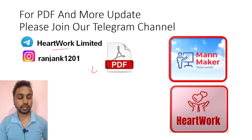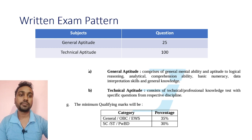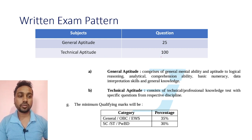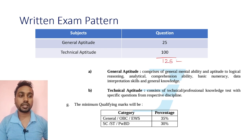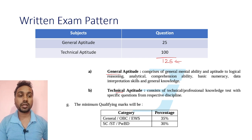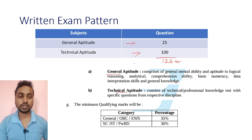For your exam, there will be a total of 125 questions for 125 marks. The paper contains General Aptitude and Technical Aptitude — General Aptitude for 25 marks and Technical Aptitude for 100 marks. Negative marking is also there for your exam.